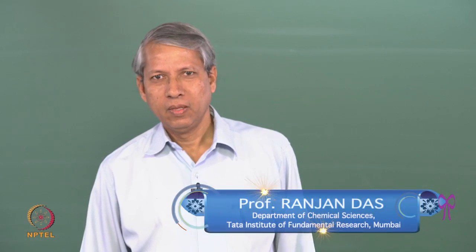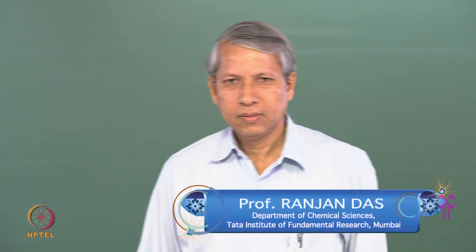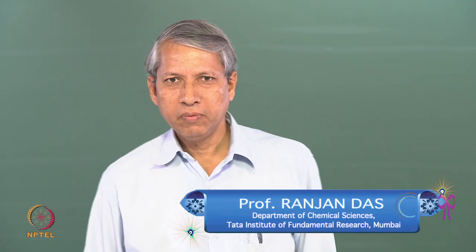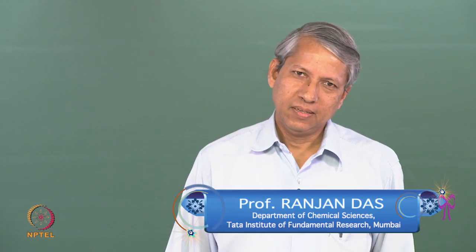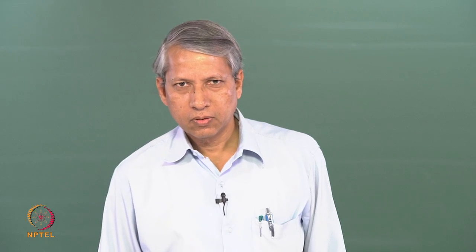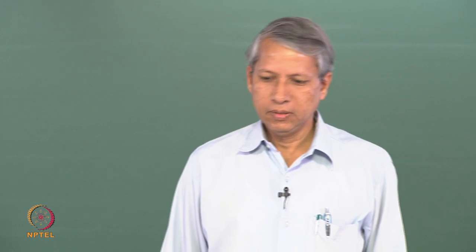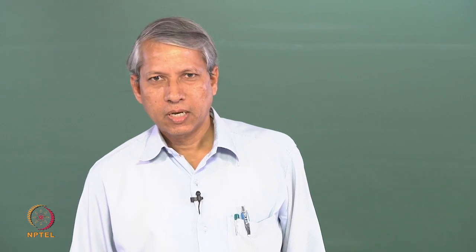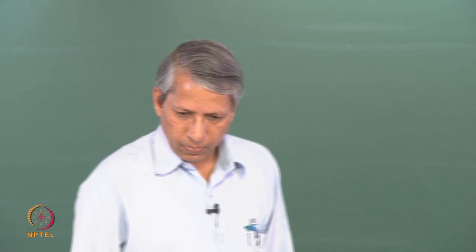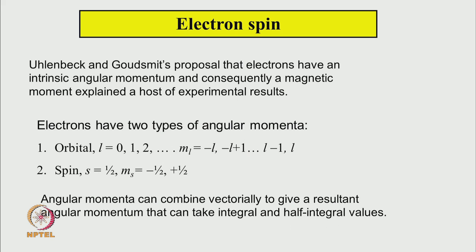In our last lecture we saw that Uhlenbeck and Goudsmit made a very bold proposition that the electron has an intrinsic angular momentum called electron spin angular momentum, and that explained a host of experimental observations. So now the electron can have two types of angular momentum: orbital angular momentum and spin angular momentum.